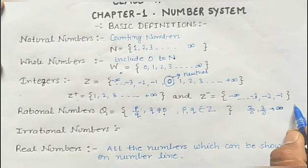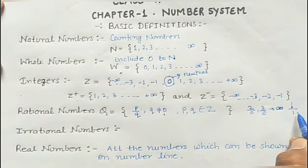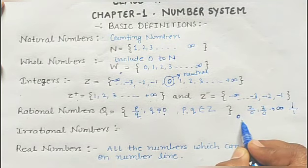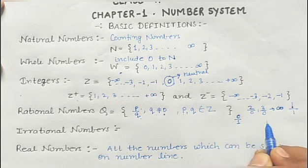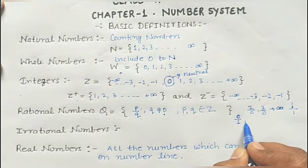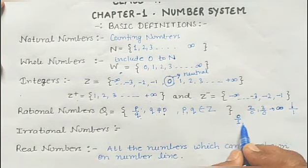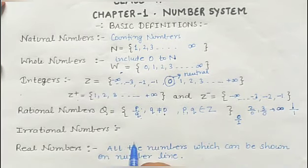For example, if I have written only 1, it is also a rational number because you can write it as 1 by 1. If I have written 0 — is 0 rational or irrational? We can write 0 upon 1, 0 upon 2, 0 upon 3 — the value of 0 will not be affected. So 0 is also a rational number. Now coming to the next topic: irrational numbers.